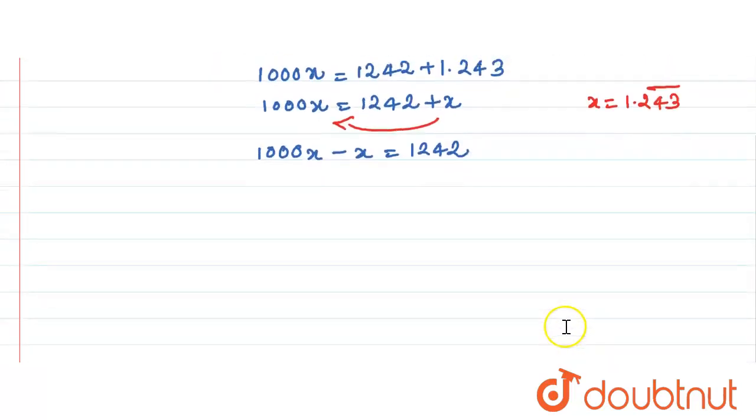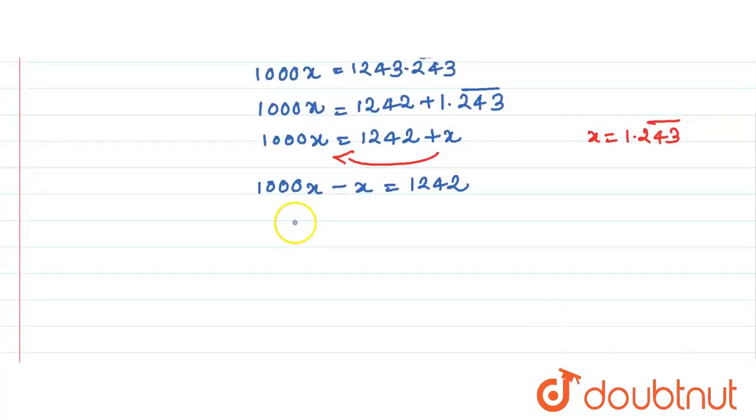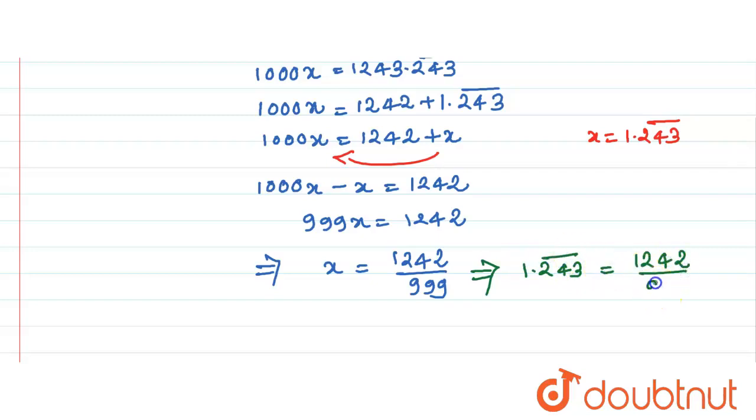And in the next step, what I have? This is 999x. This is equal to 1242. And therefore, this x is equal to 1242 divided by 999. This is nothing but 1.243 bar can be written as 1242 divided by 999.